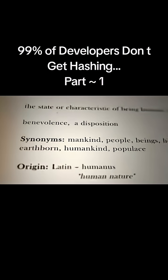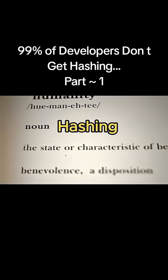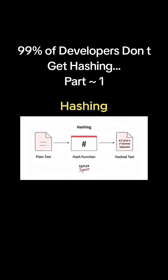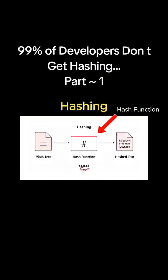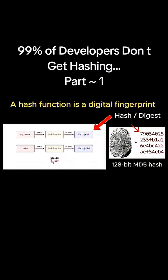The first thing you want to do to break down any complex computer science topic is to begin with a concrete definition. Hashing is the process of transforming data of any size into a fixed-size output using a mathematical function known as a hash function. The resulting value, called a hash or digest, acts like a digital fingerprint for the input data. It uniquely represents the content without revealing the original data itself.